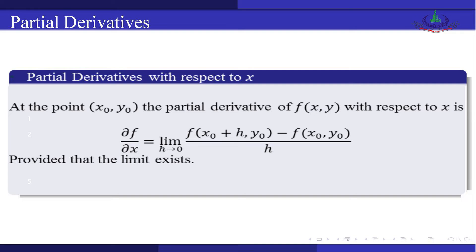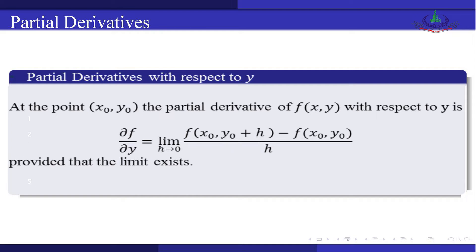provided that the limit exists. Similarly, we can define the partial derivative with respect to y at the point (x₀, y₀). The partial derivative of f(x, y) with respect to y is: ∂f/∂y = lim(h→0) [f(x₀, y₀+h) − f(x₀, y₀)] / h, provided that the limit exists.